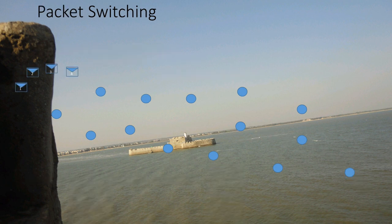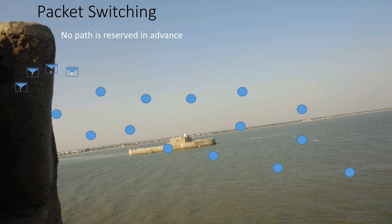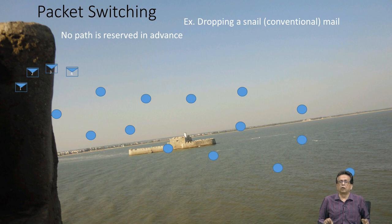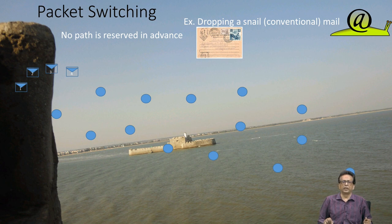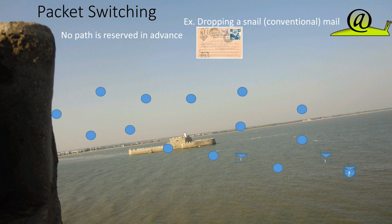Packet switching, on the contrary, does not use the same path and packets do not even travel at the same speed. So it is possible that delivery is not in order. You can see that we have four packets numbered 1, 2, 3, 4, but they will not be received at the other end in the same order. No path is reserved in advance, unlike circuit switching. Dropping a conventional mail or sending an SMS is the same idea — they are sent and received in a different order. That is the connectionless delivery mechanism.